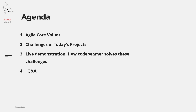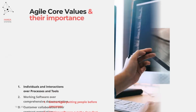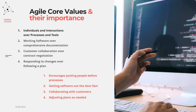What are some of those core values and why are they so important within the agile methodology? One of these core values is that agile prefers to highlight individuals and interactions over processes and tools. You might think that's a paradox since today we're looking at a tool, but it's very important that we're able to put people before the process itself.